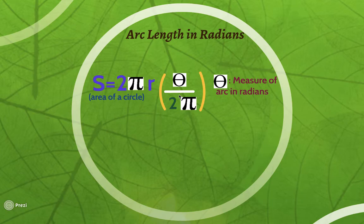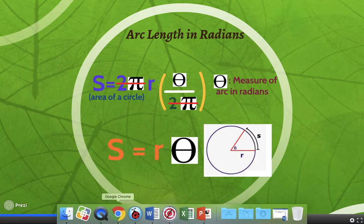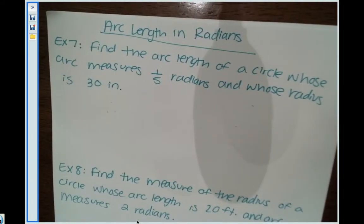We simplified this formula. If you notice, there's a 2π in the numerator and denominator, so those will cancel out, and then we're left with S equals R times theta. So that is our arc length formula that we're going to be using.